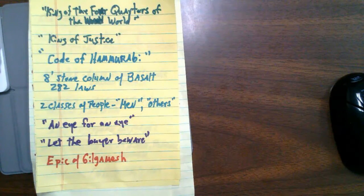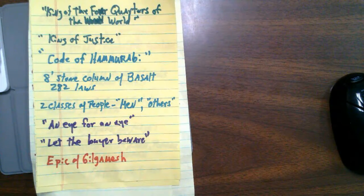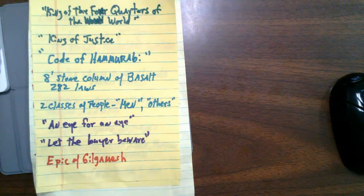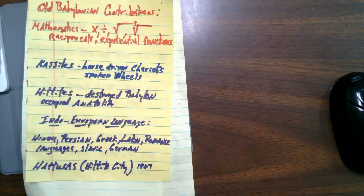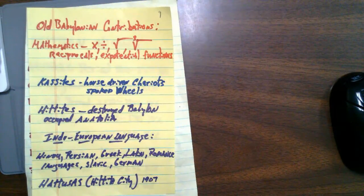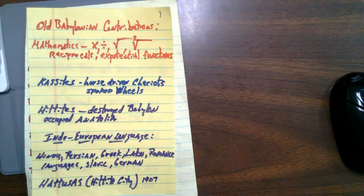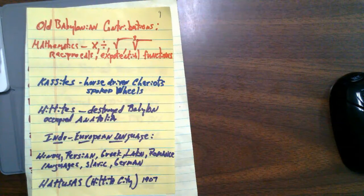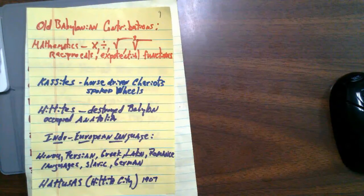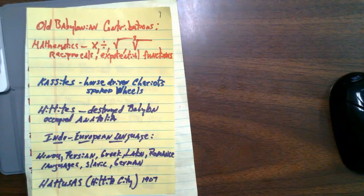The Epic of Gilgamesh tells of an ancient king — we're talking 5,000 years ago, possibly Sargon — and I've provided videos on both Gilgamesh and Hammurabi. Some Old Babylonian contributions to Western civilization include mathematics: multiply, divide, square roots, cube roots, reciprocals, and exponential functions — all developed 5,000 years ago.